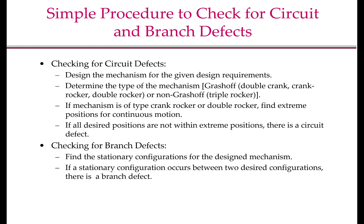In general, checking for circuit and branch defects of mechanisms is quite complicated. What we are discussing here is a simplistic procedure that works only for four-bar mechanisms. Given the designed mechanism and the design requirements, the first step is to determine the type of the mechanism — whether it is Grashof or non-Grashof. If the mechanism is non-Grashof and that is acceptable, you immediately know that it doesn't have any circuit defect, because a non-Grashof mechanism has a single circuit. However, it may have branch defect.